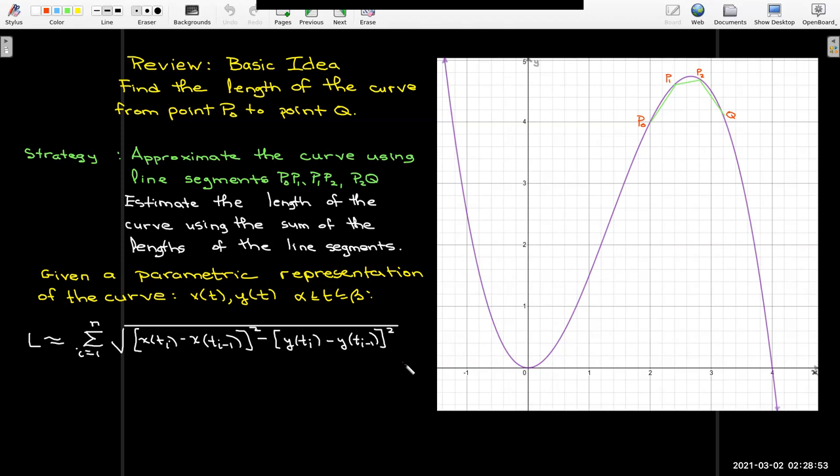And then I do more algebra. I can multiply and divide by delta t. That gives me this expression, and I let the number of line segments go to infinity, and that gives me an integral where I have on the inside now something that really does remind me of the Pythagorean theorem. We're having a dx/dt squared plus dy/dt squared, and then we take the square root of it.